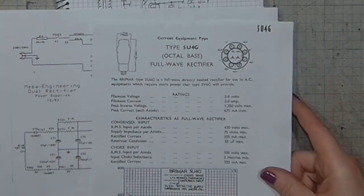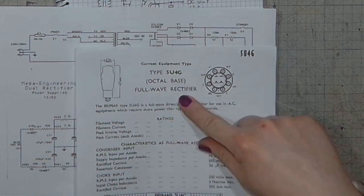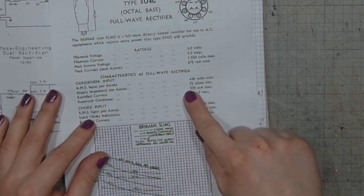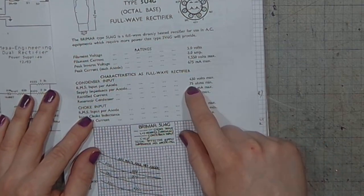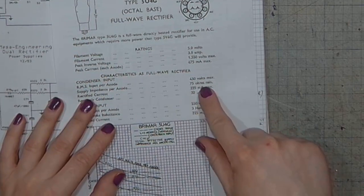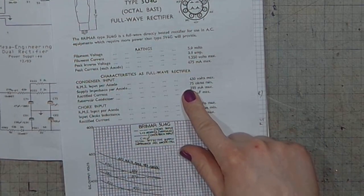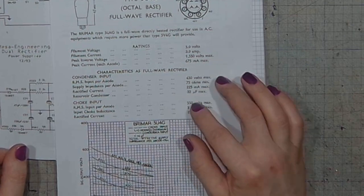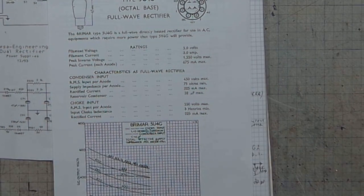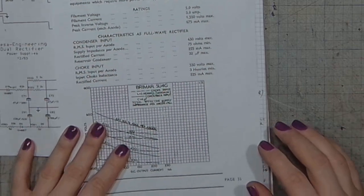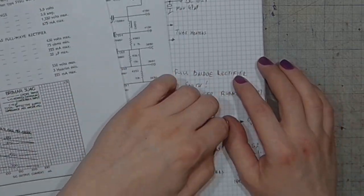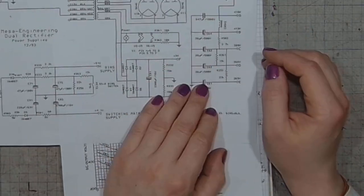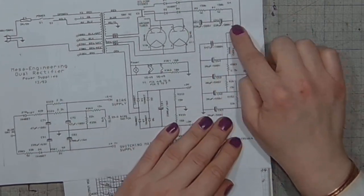Whereas if we take a look at the 5U4G datasheet, this one is from Brimar, the recommended capacitor is 32 microfarad maximum. That is for a single tube, so we can assume that it would be 64 microfarad for two tubes connected in parallel, which is still half of the Mesa Boogie or messy booger, like I call it, 110 microfarad.